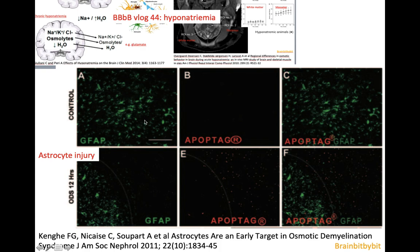The astrocytes have been labeled green, and you can see there is an entire area lacking astrocytes, which is the region of the ODS. Another marker for DNA damage and apoptosis shows a lot of apoptosis of the astrocytes in this area. In the rats with demyelination syndrome there was a clear boundary between the normal brain and the affected area.